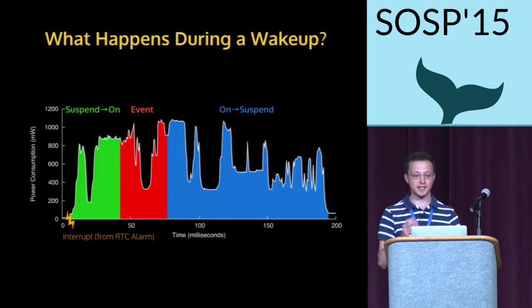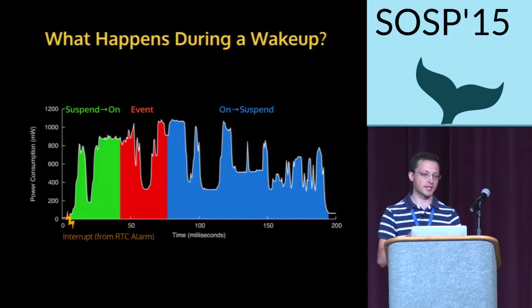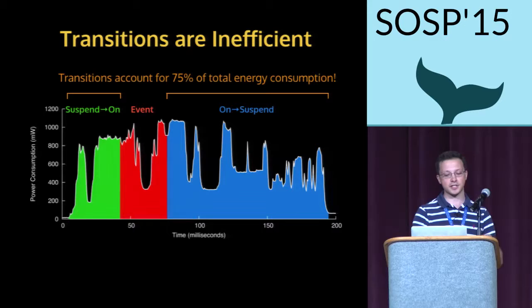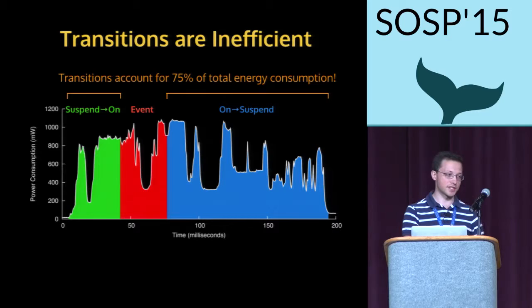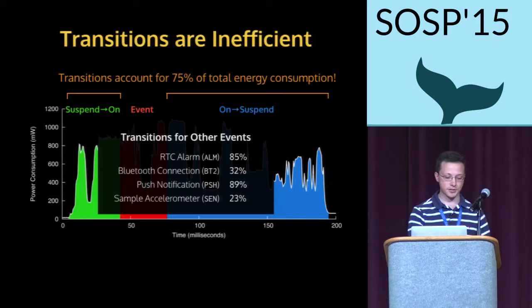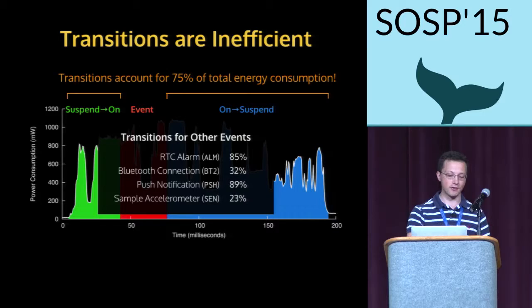The kernel takes us from an on state down into a suspended sleep state. Highlighted by the colored areas, this represents the energy — the white line is the power trace, and the colored area is the integral over the power. We can see that the transitions are actually really inefficient compared to the event itself. In this case, we consume 75% of the total energy on transitions, whereas the event itself takes only the remaining 25%. This is true not just for the pull data event, but also for other common wake-up events that occur while applications are running on the system.